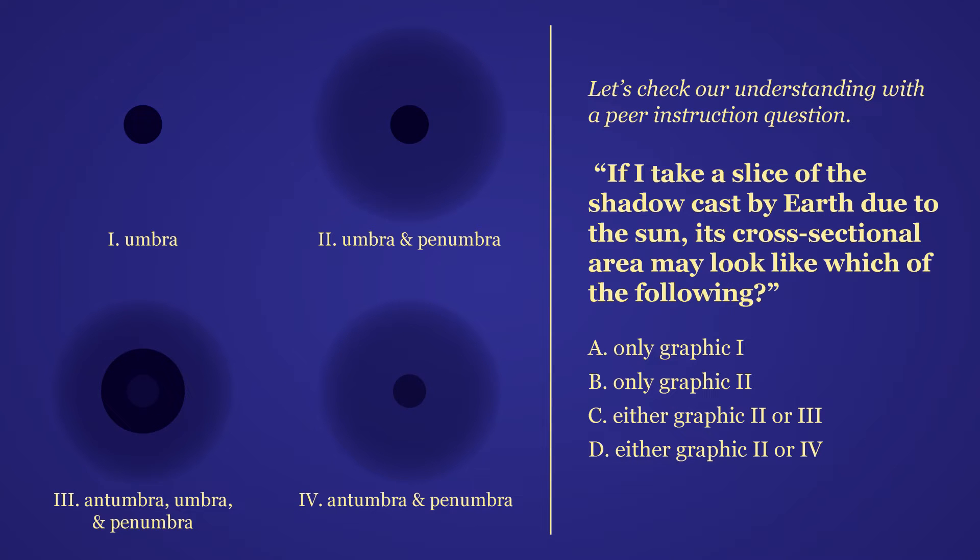Let's check our understanding with a peer instruction question. If I take a slice of the shadow cast by Earth due to the sun, its cross-sectional area may look like which of the following?